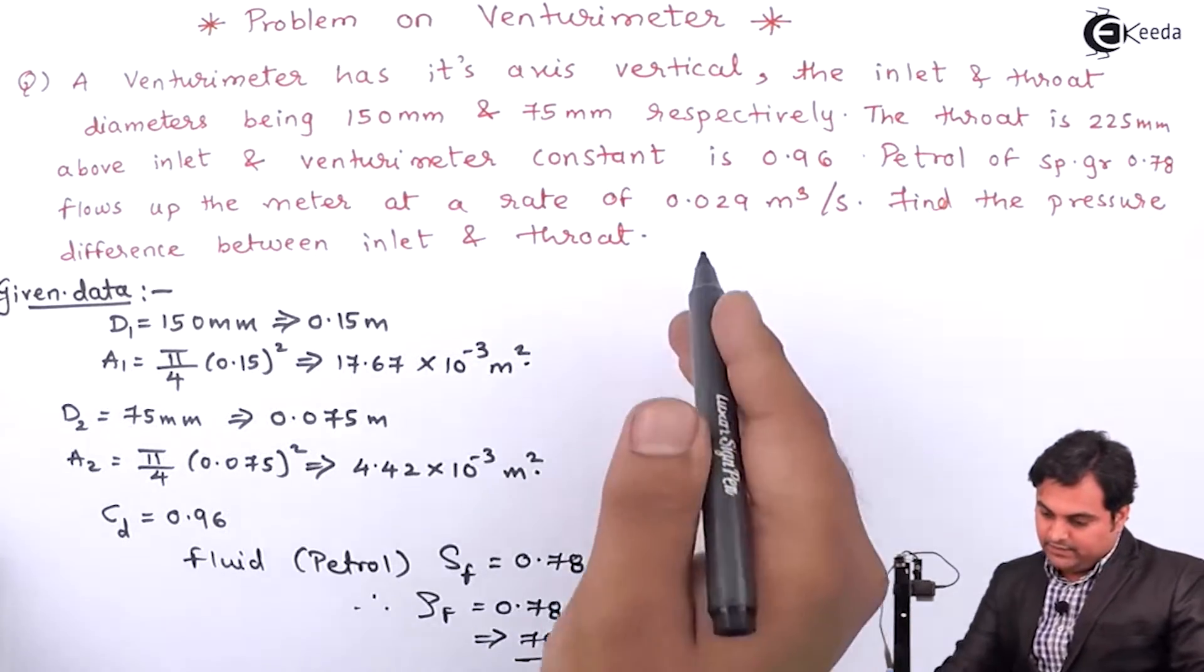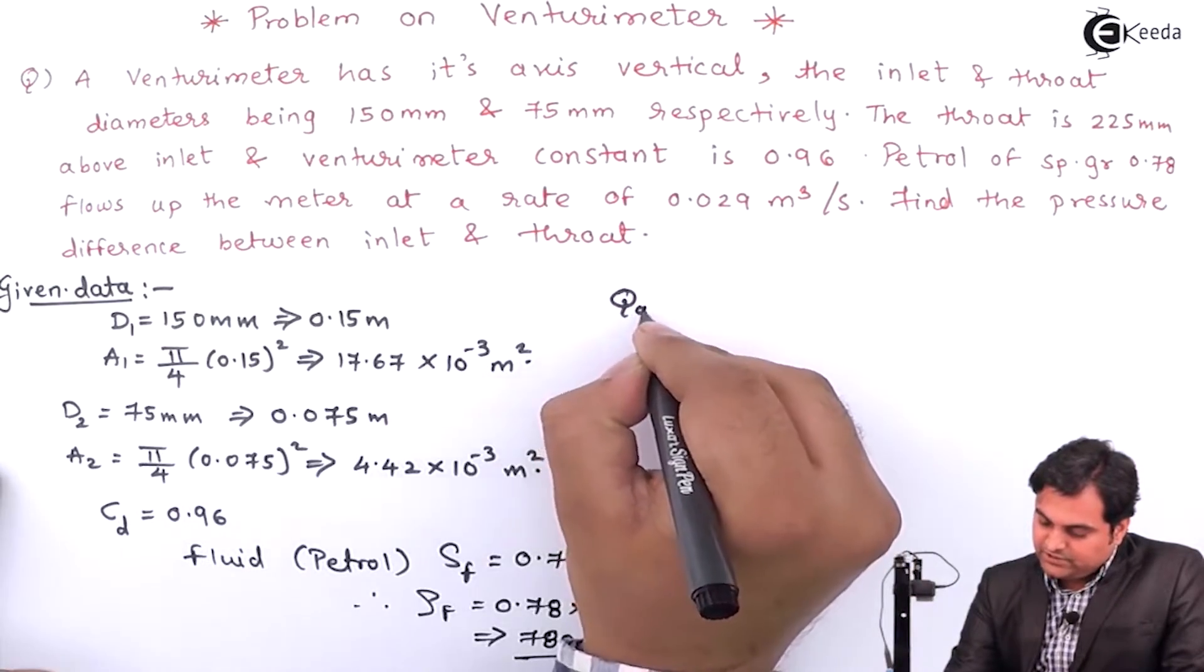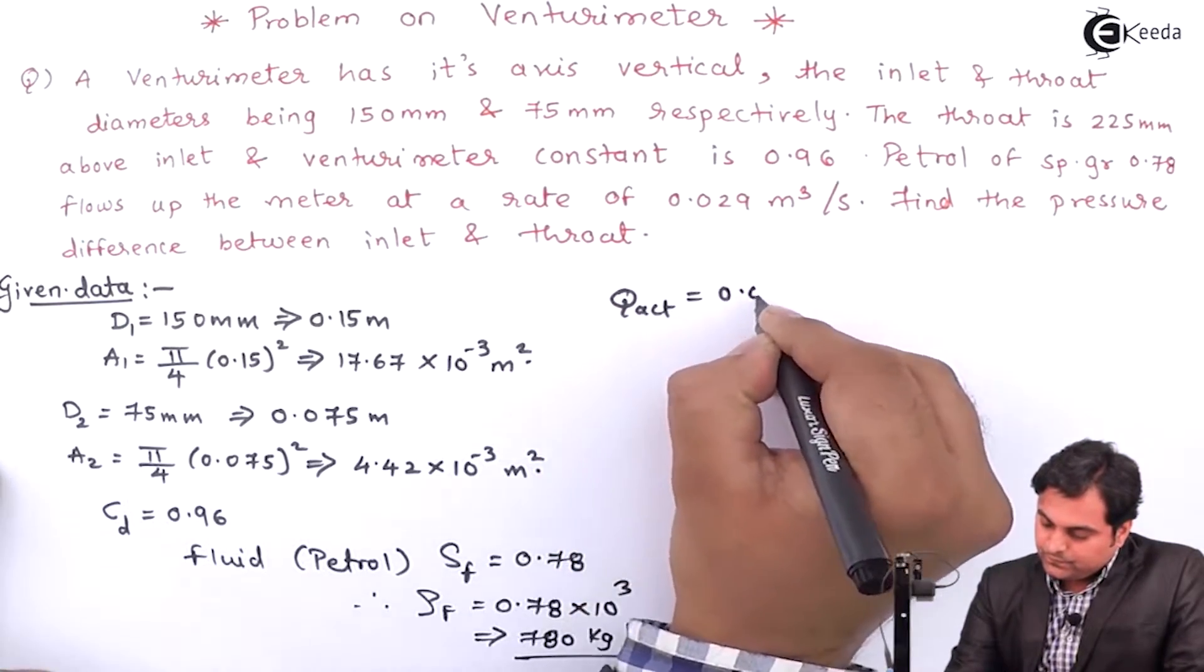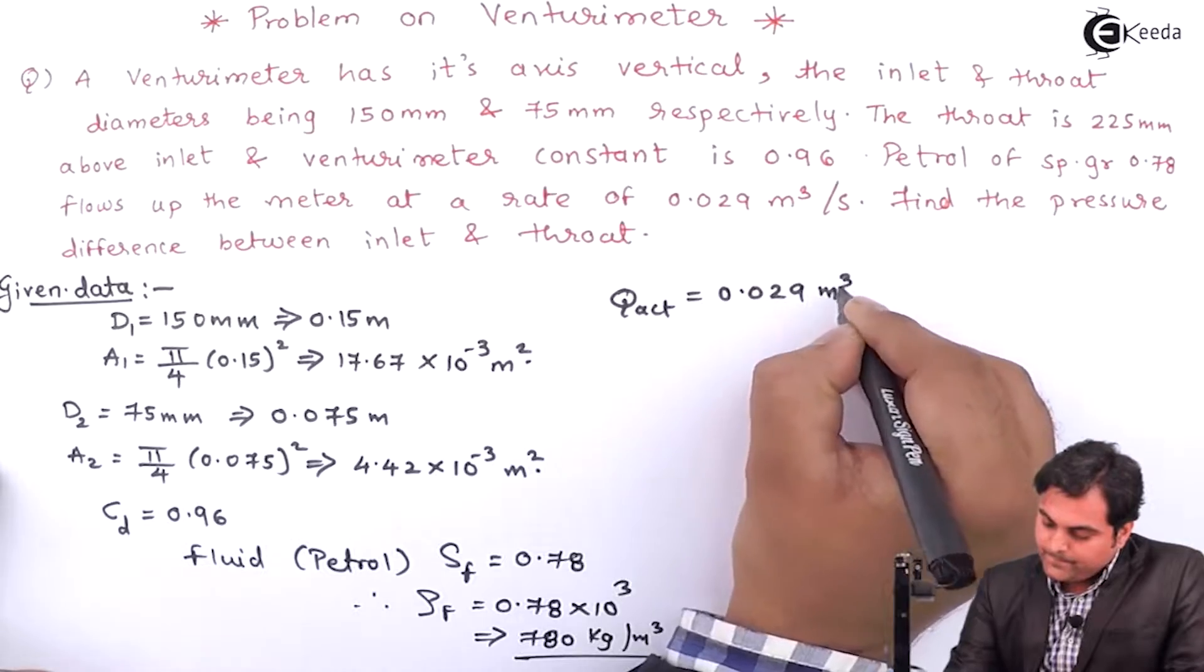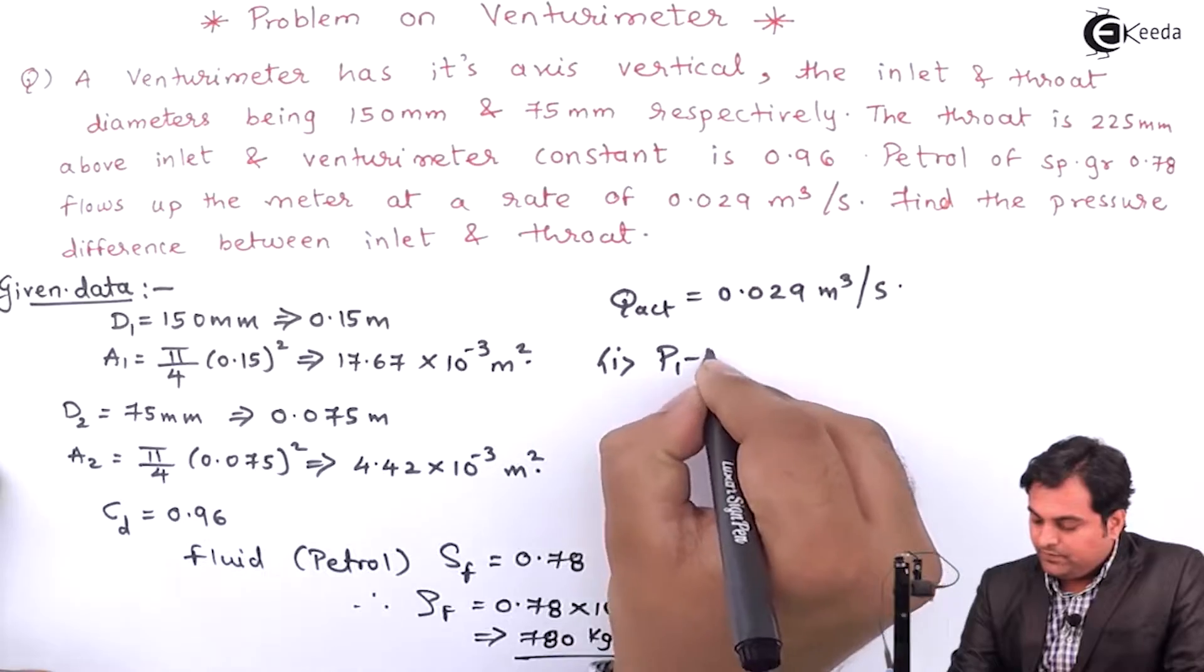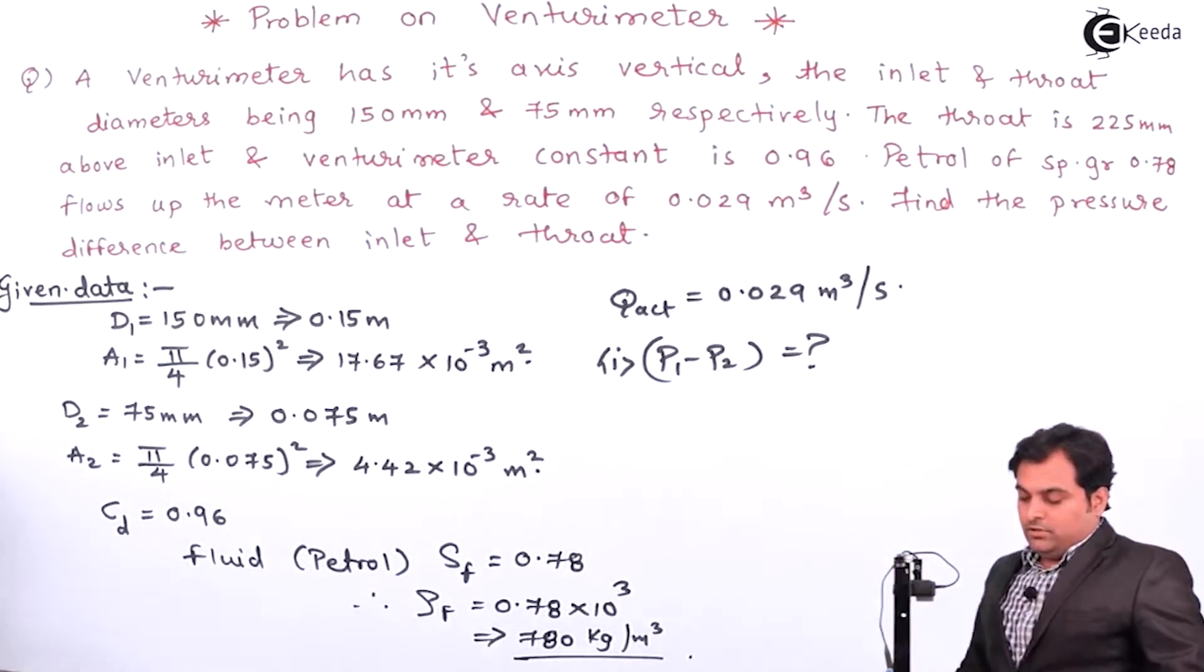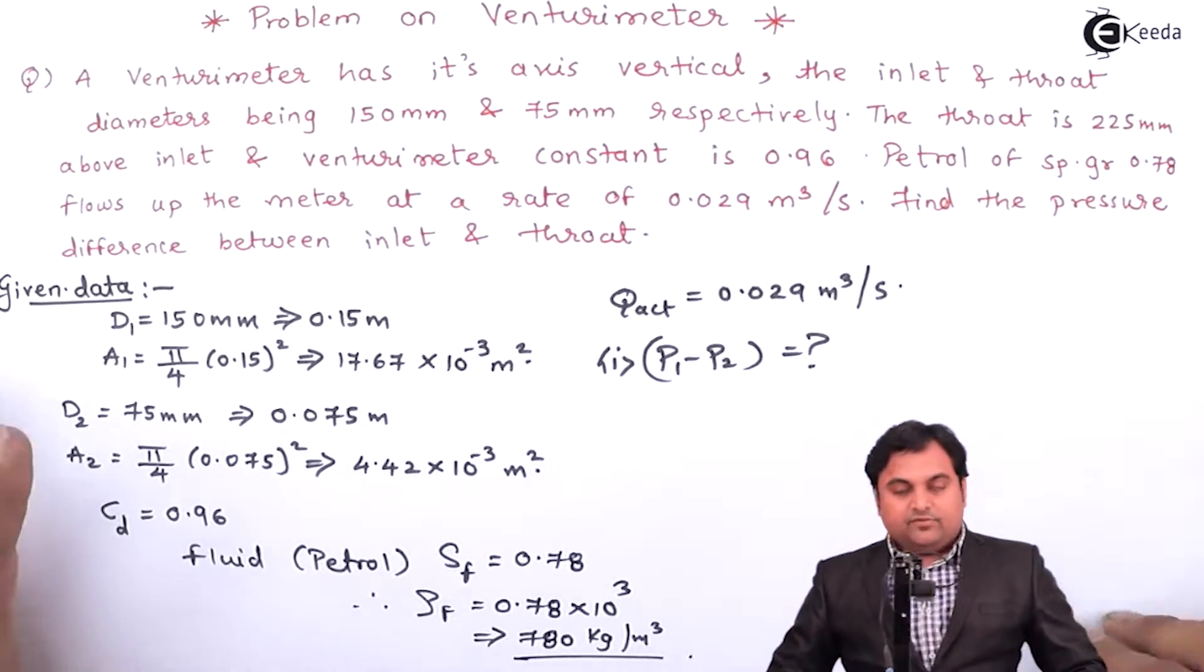And at the rate of 0.029 meter cube per second, so that is the actual discharge given. Find the pressure difference between inlet and throat, so P1 minus P2 is what we have to find out here. Now I'll draw the diagram of the venturimeter.